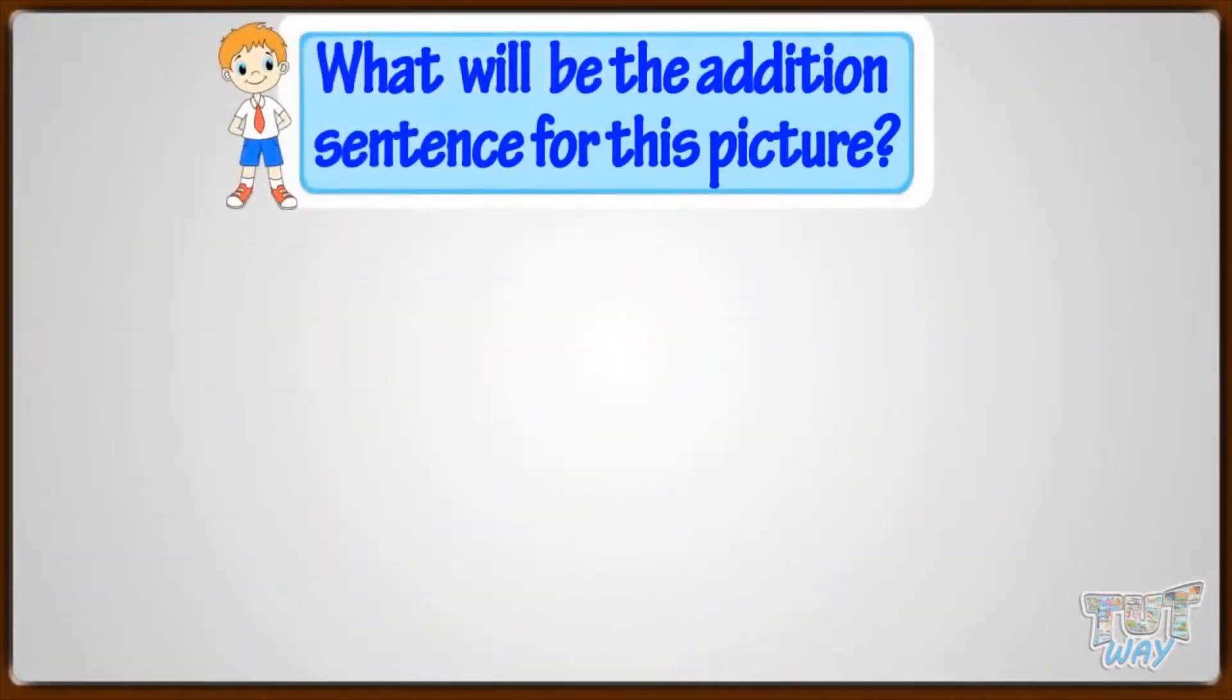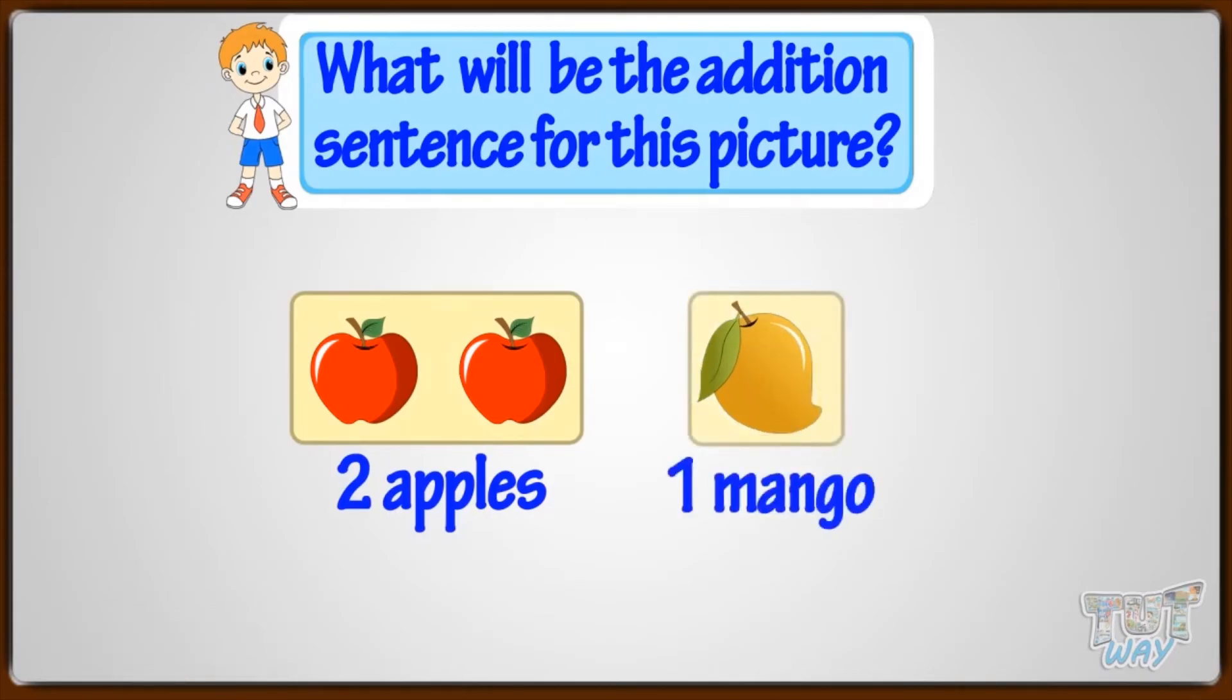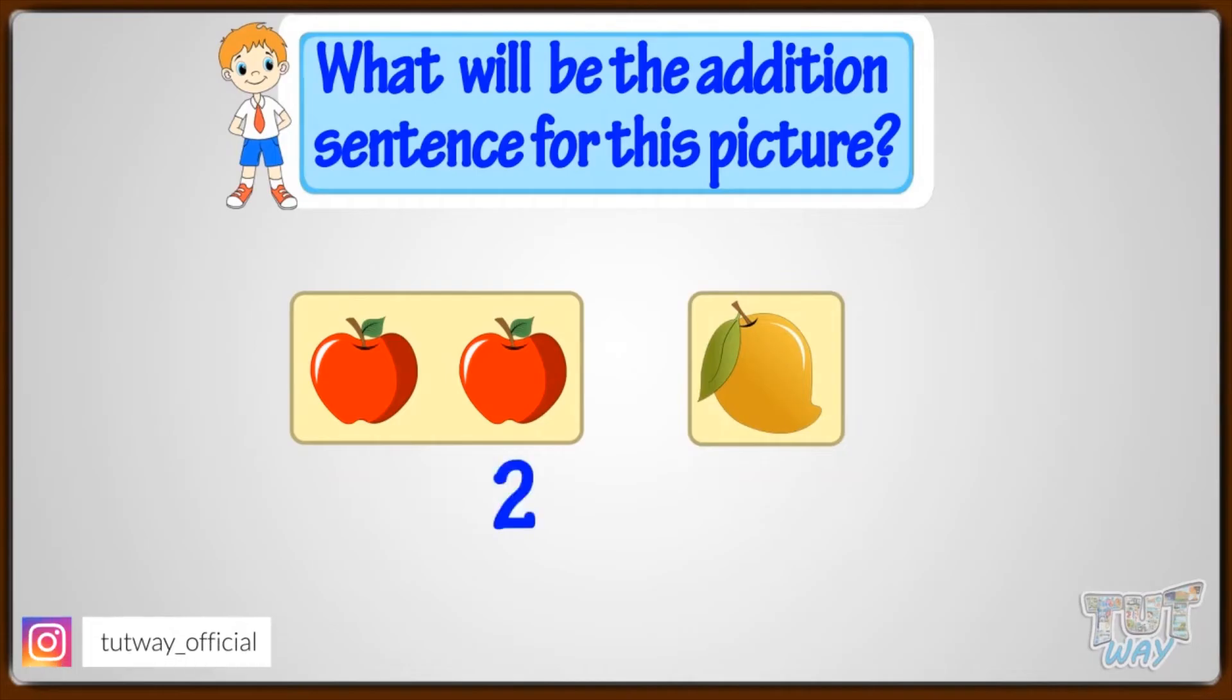What will be the addition sentence for this picture? Here are two apples and one mango. First write 2 plus 1. Now, count the total number of fruits. Total number of fruits are 3. So, write 2 plus 1 equals 3. Good! The addition sentence for this picture is 2 plus 1 equals 3.